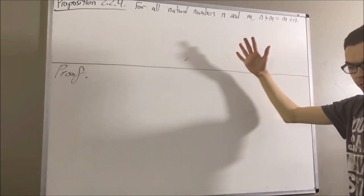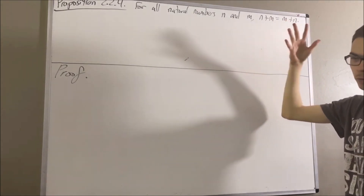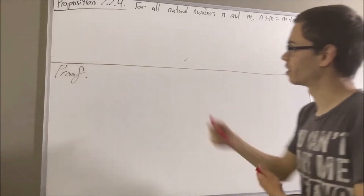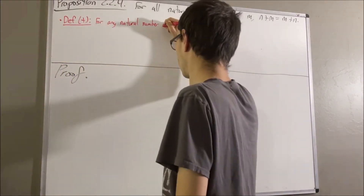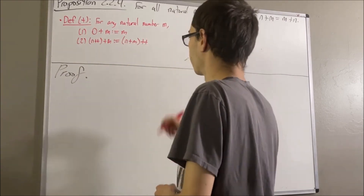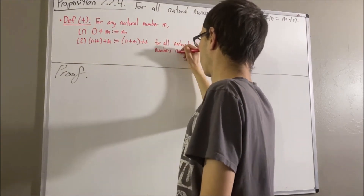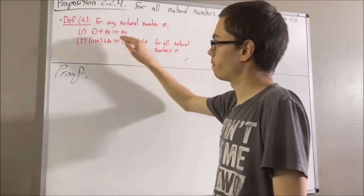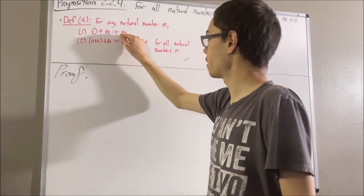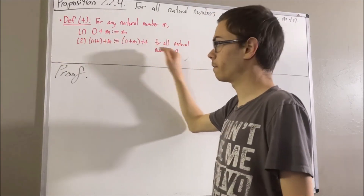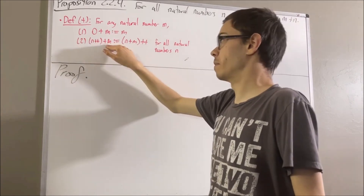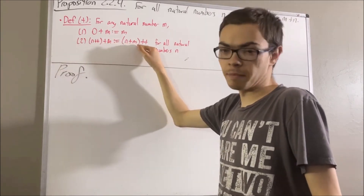We are referencing Tao's Analysis, and the way that he defines addition of natural numbers is as follows. For any natural number m, we define 0 plus m to be m, and for all natural numbers n, we define the successor of n plus m to be the successor of n plus m.